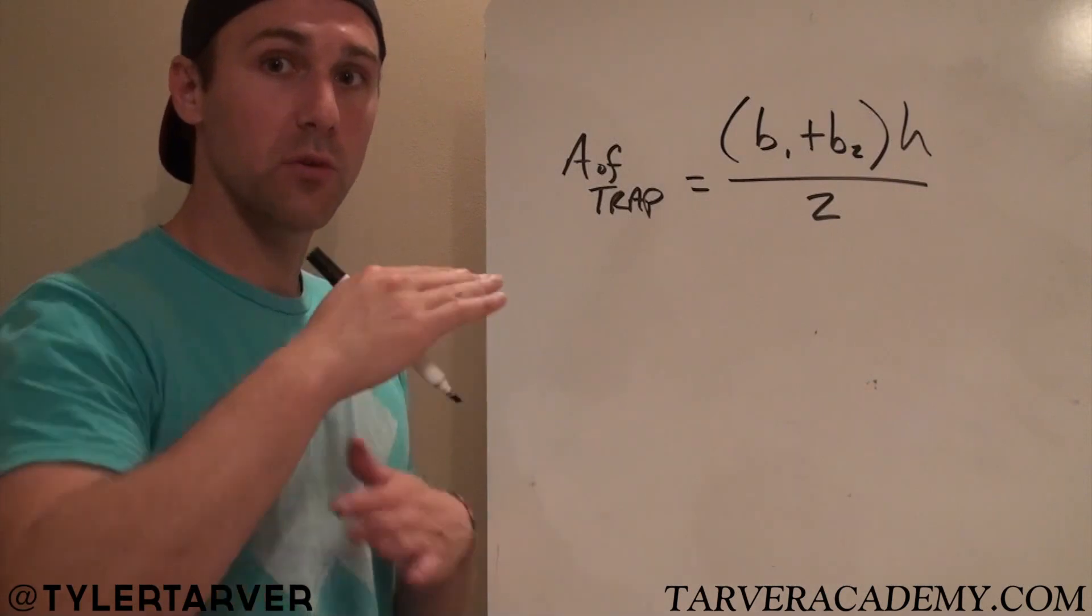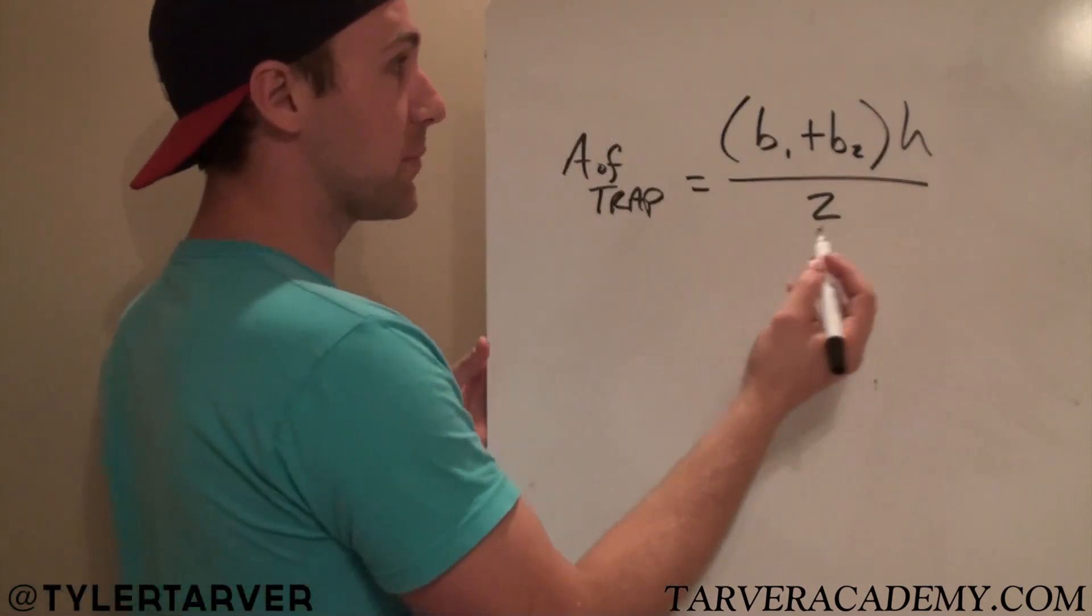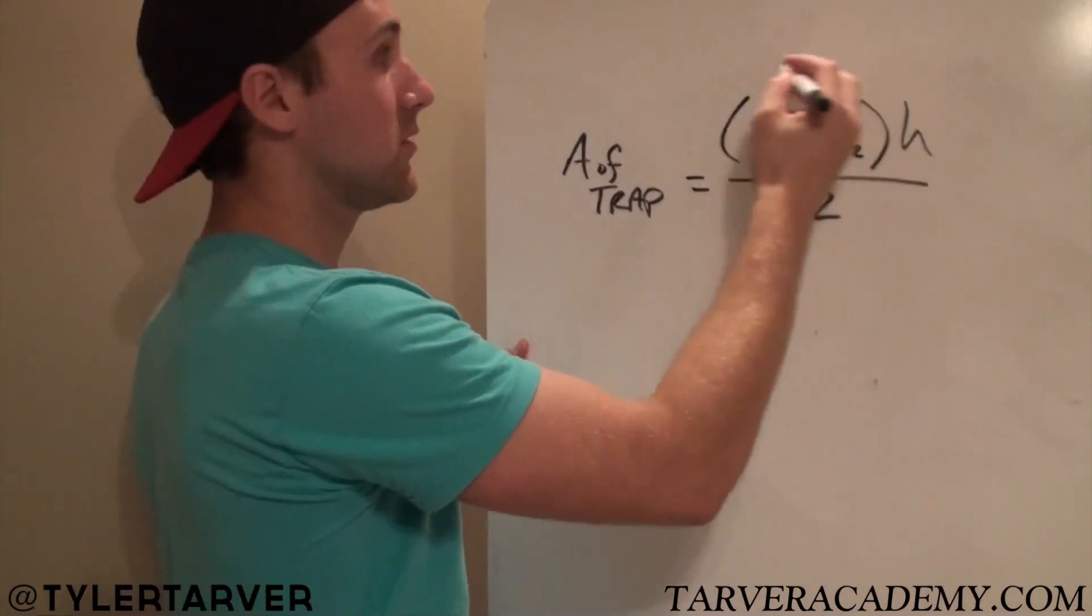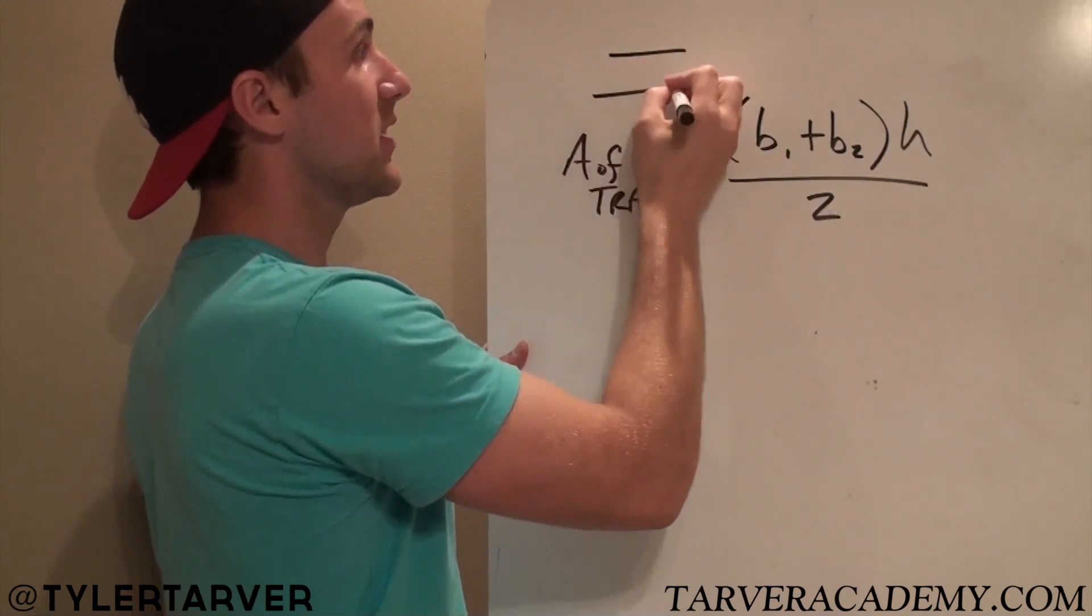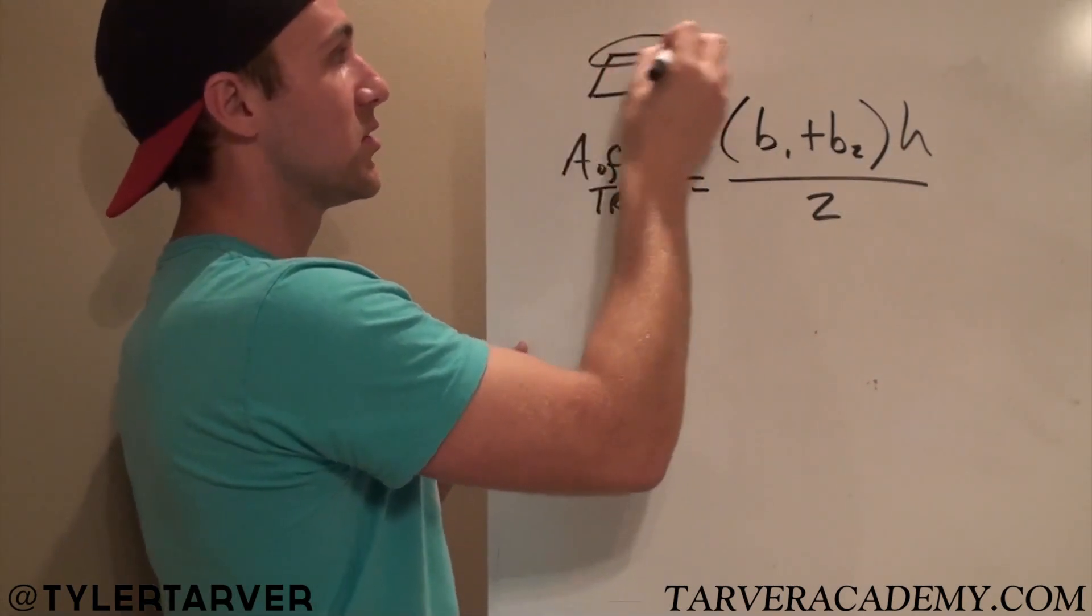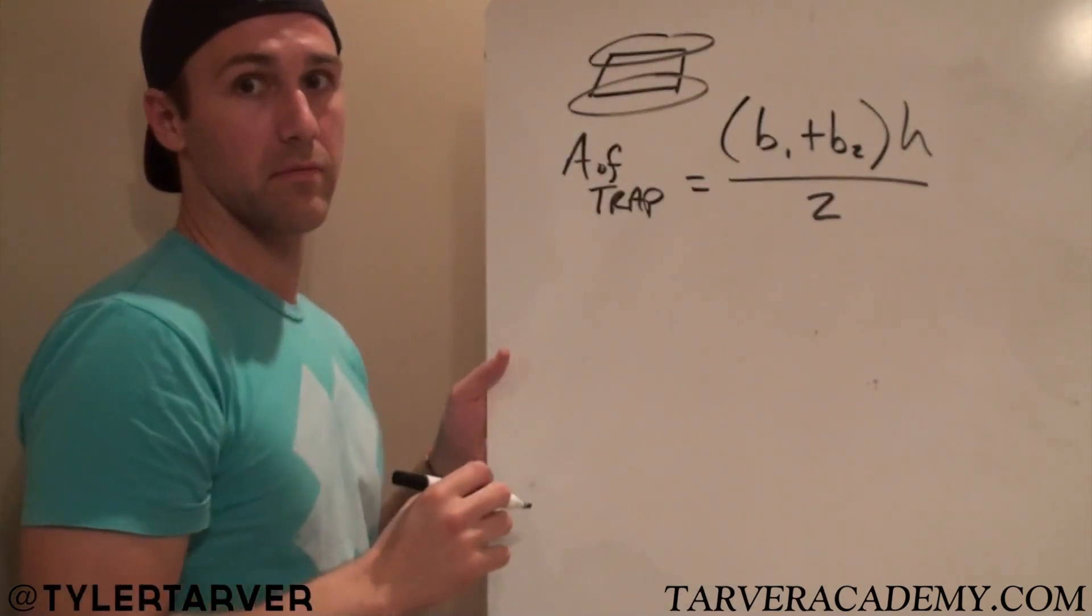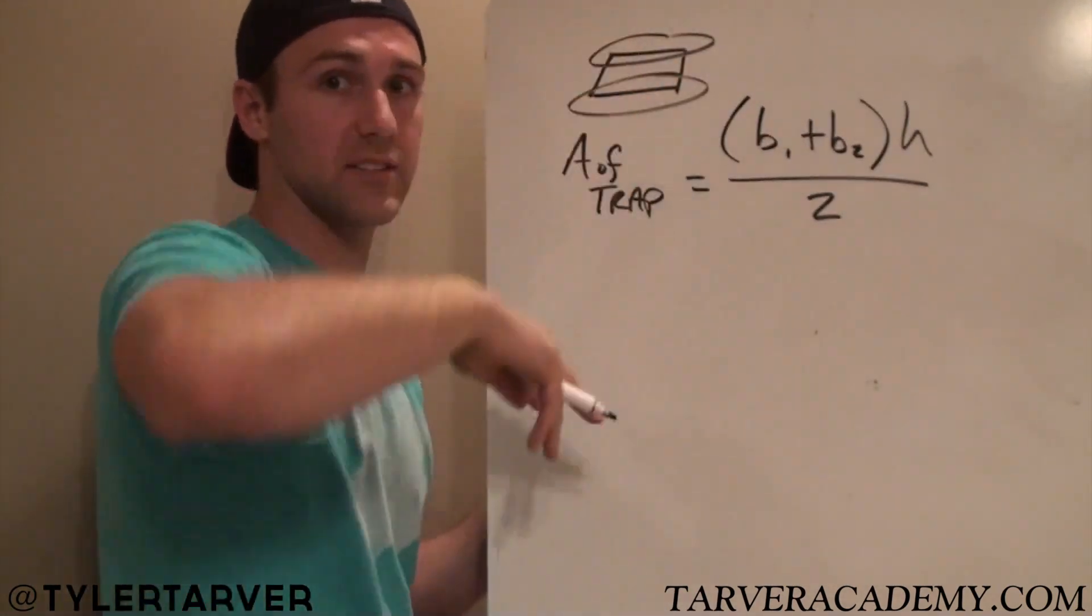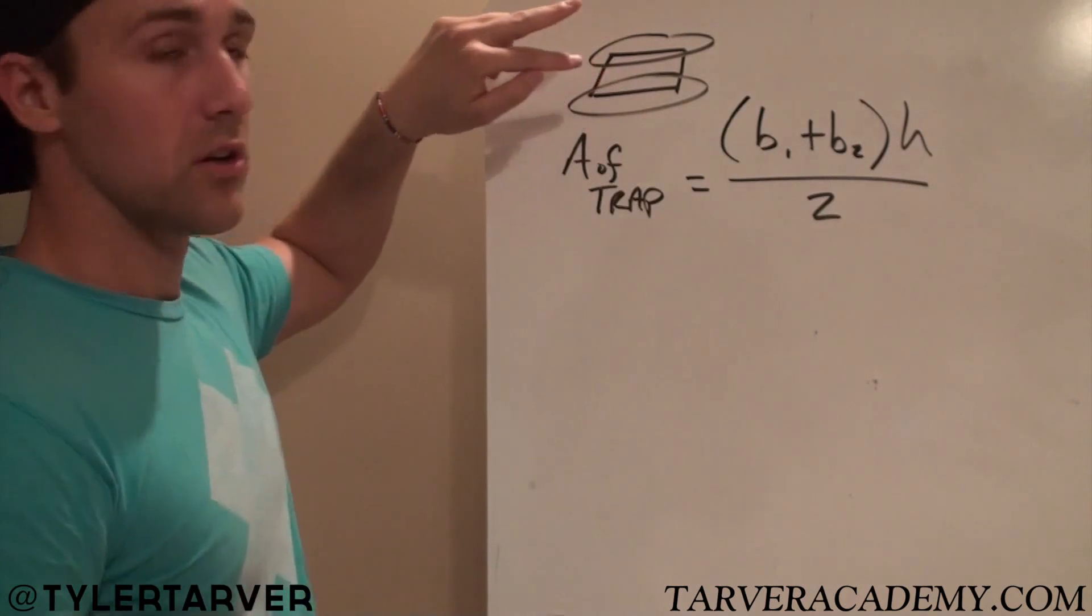Two bases are the two parallel lines, because as you know, in a trapezoid, you have to have at least two parallel lines. The other two don't matter, but you have to have two lines that are parallel. They don't have to be the top and the bottom. They can be the sides. It doesn't matter, as long as two are parallel.